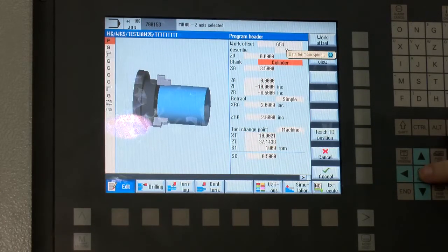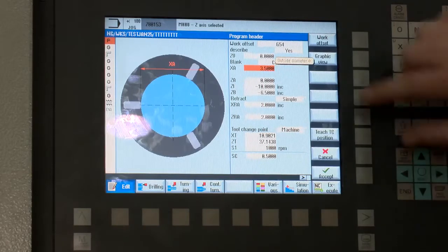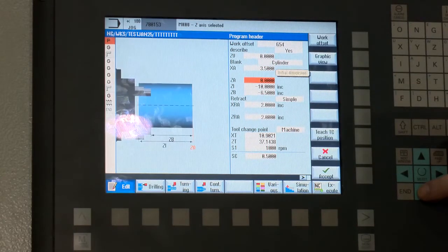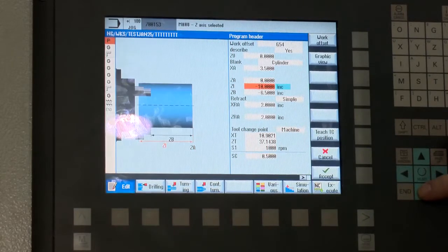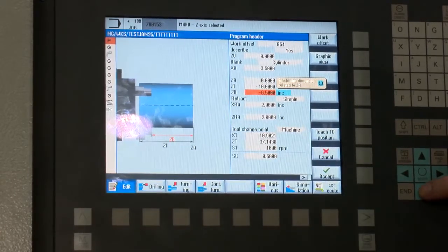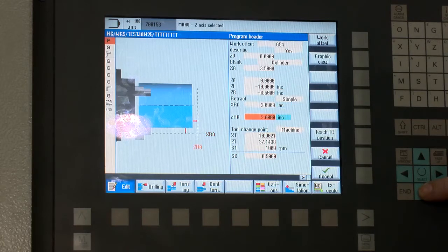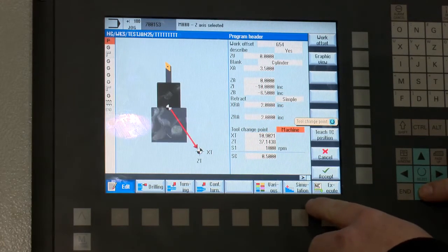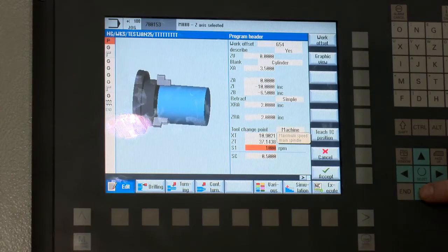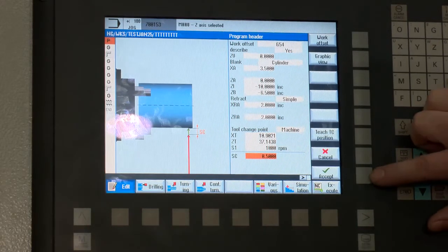You'll pick out the material that you're using. You can go from cylinder, pipe, block, hex. You'll enter your material diameter, the start of your work face, how long your blank is, how long your blank is sticking out from the chuck jaws. You'll put in your retracts for X and Z axis. And then you'll also set your tool changer point where your carousel will go away to do its tool change. You can also set your max RPM and then your safety distance before it feeds into the material. Once this is complete, you hit accept.